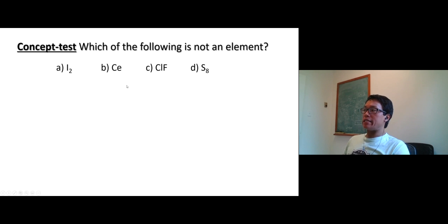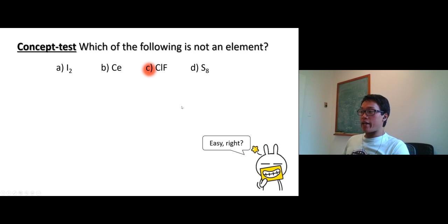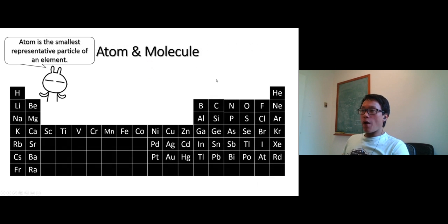Now, which of the following is not an element? Iodine, totally an element. Ce is cerium, also an element totally. Cl and F - that's just one element, sulfur.